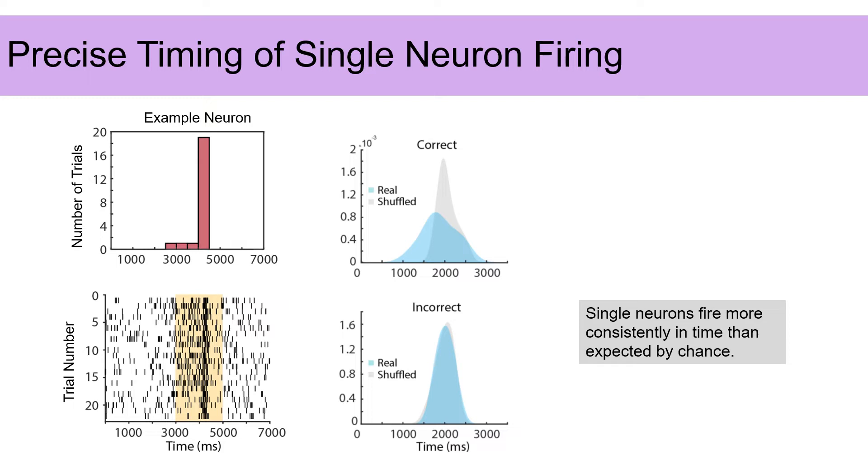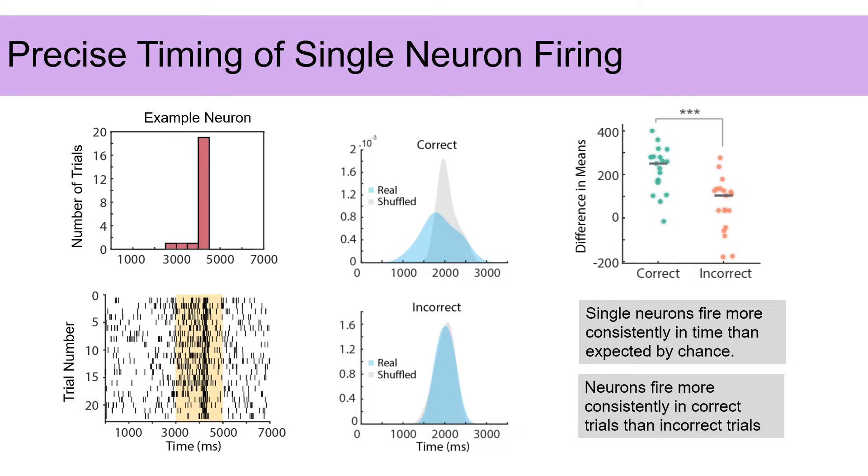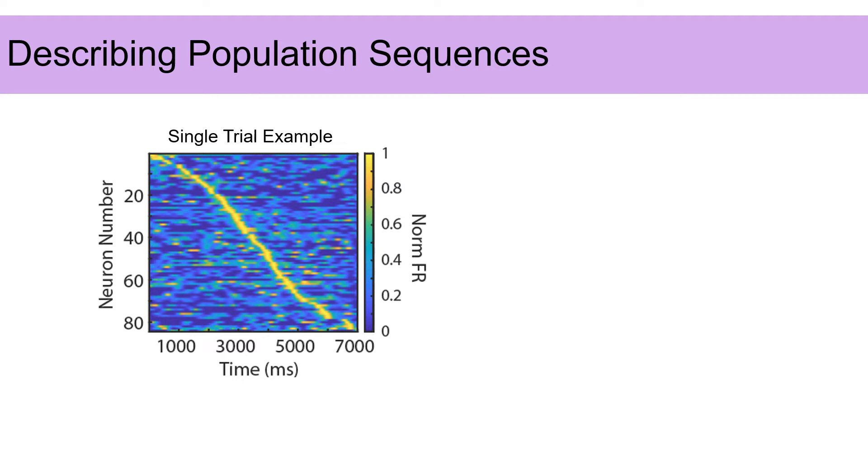So we calculated the standard deviations for all neurons and then shuffled the timing of neurons and calculated the random standard deviations. We compared the real distribution of standard deviations versus the shuffled distribution for correct and incorrect trials. And we noticed that these distributions were overlapping for incorrect trials, suggesting that neurons were not firing any more consistently than we would expect them to by chance. To quantify this, we calculated the difference between distribution means for correct and incorrect trials for all sessions. We found that the distributions were more overlapping in incorrect trials.